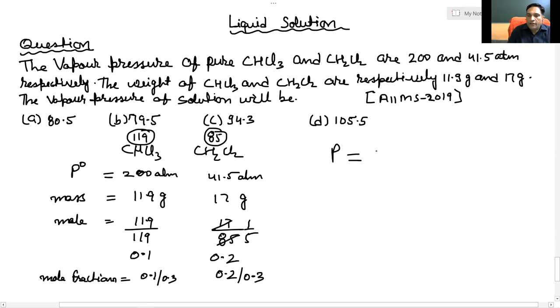X into P naught of chloroform plus mole fraction into vapor pressure of CH2Cl2. Chloroform mole fraction 1 by 3, vapor pressure 200.